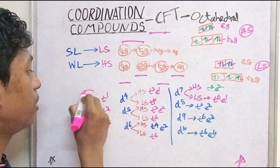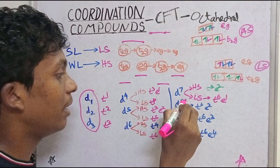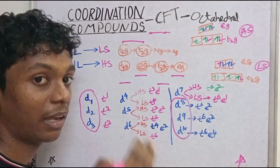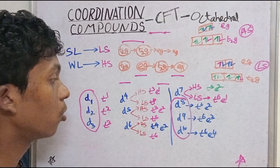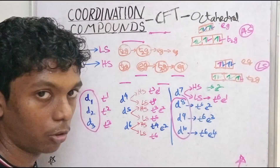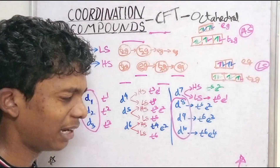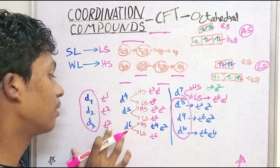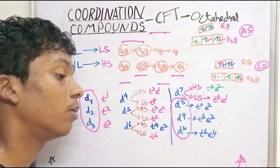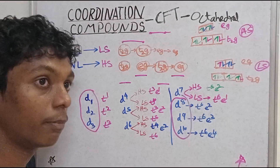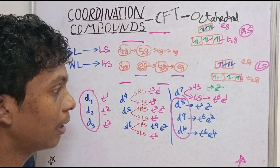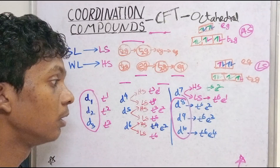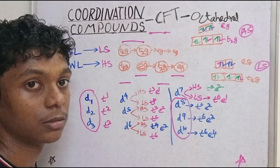Summary: D1 to D3 and D8 to D10 — the numbers 1, 2, 3 and 10, 9, 8 — these configurations are the same for both high and low spin, strong and weak ligand. Only D4 to D7 differ between high spin and low spin.